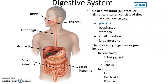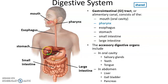We also have accessory organs that are important for the digestive system. These include things like the salivary glands found up in the head, the tongue and teeth, also found in the oral cavity. And then down in the abdomen, we have the liver — a very important organ — the gallbladder, and the pancreas, hiding behind the stomach.